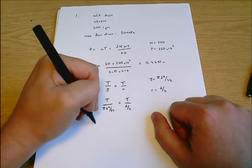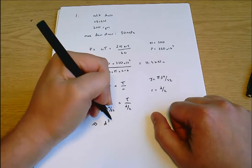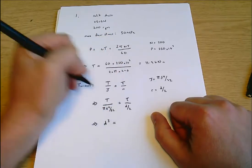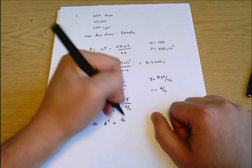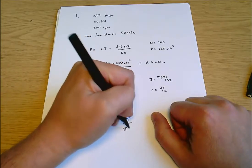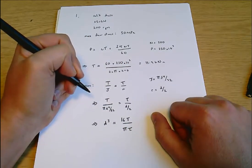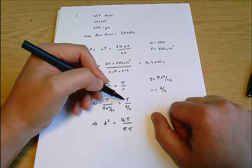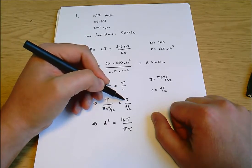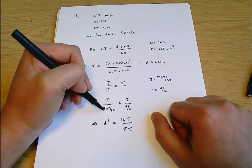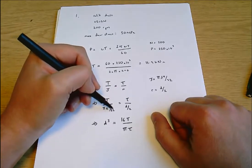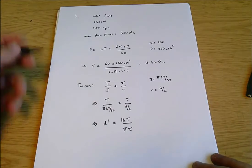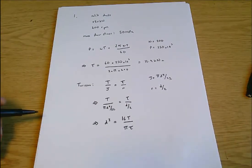Therefore rewriting all of this I can say t divided by π d to the 4 over 32 equals τ divided by d over 2, and then I can rearrange all of that. It's easy to make mistakes but I think I'm going to get d cubed equals 16t divided by π τ. I have a rough idea what a sensible number for a diameter is here.